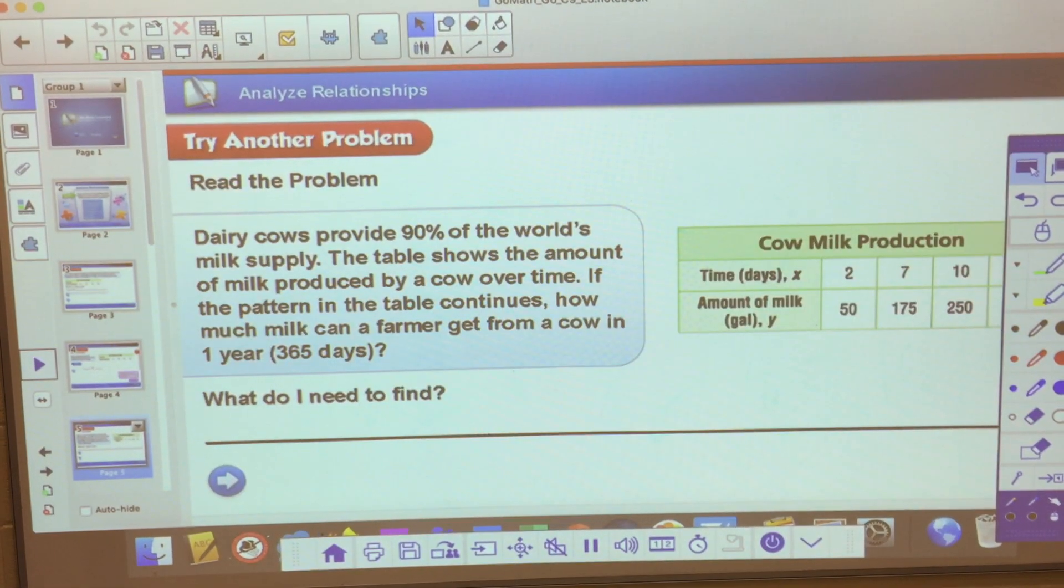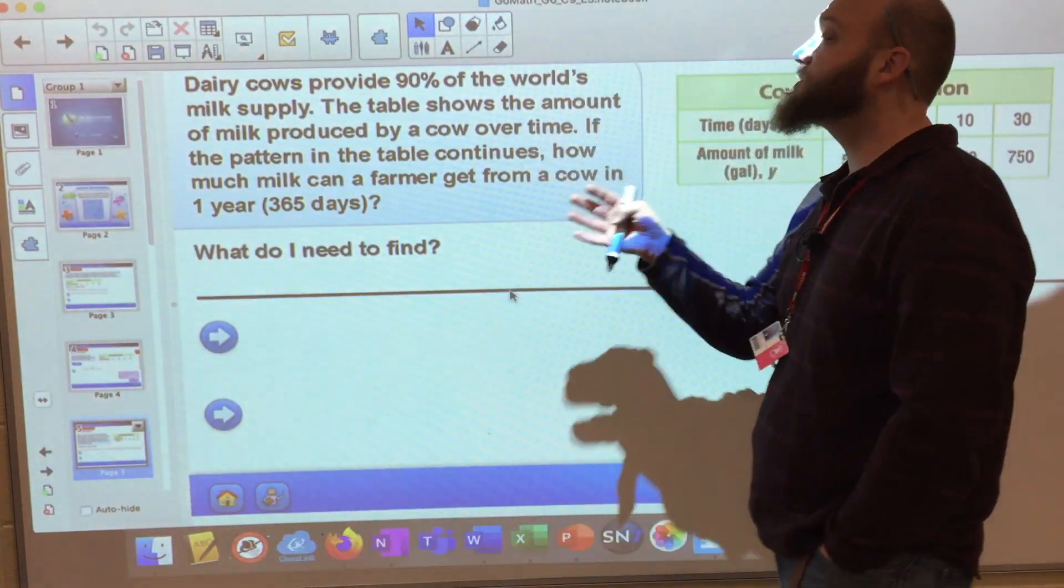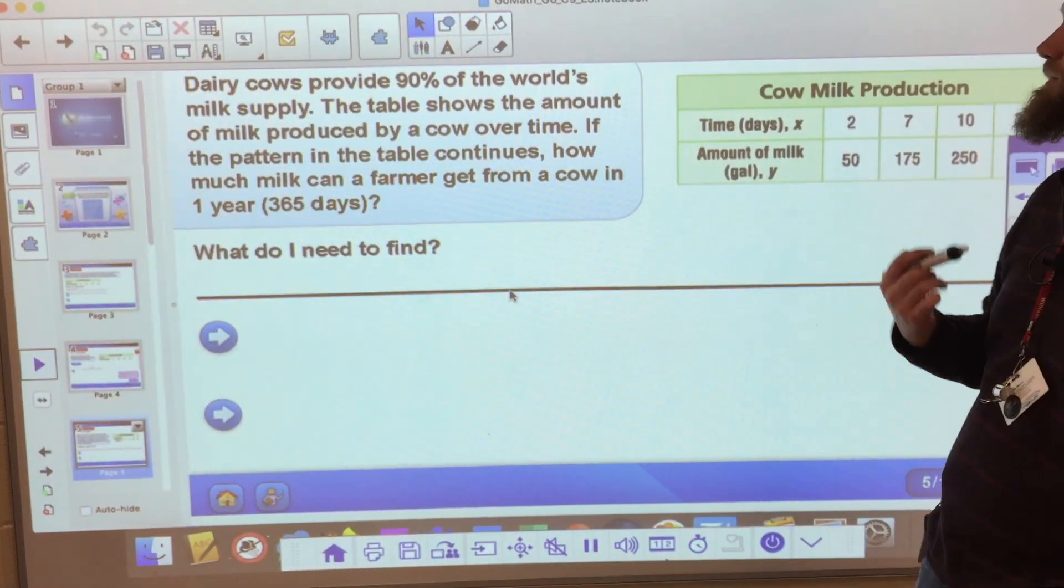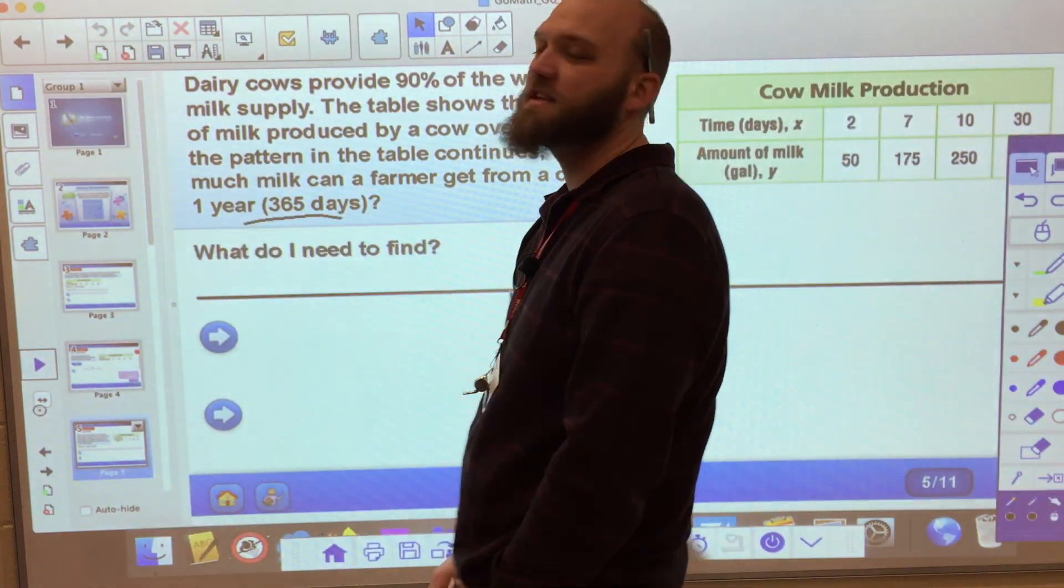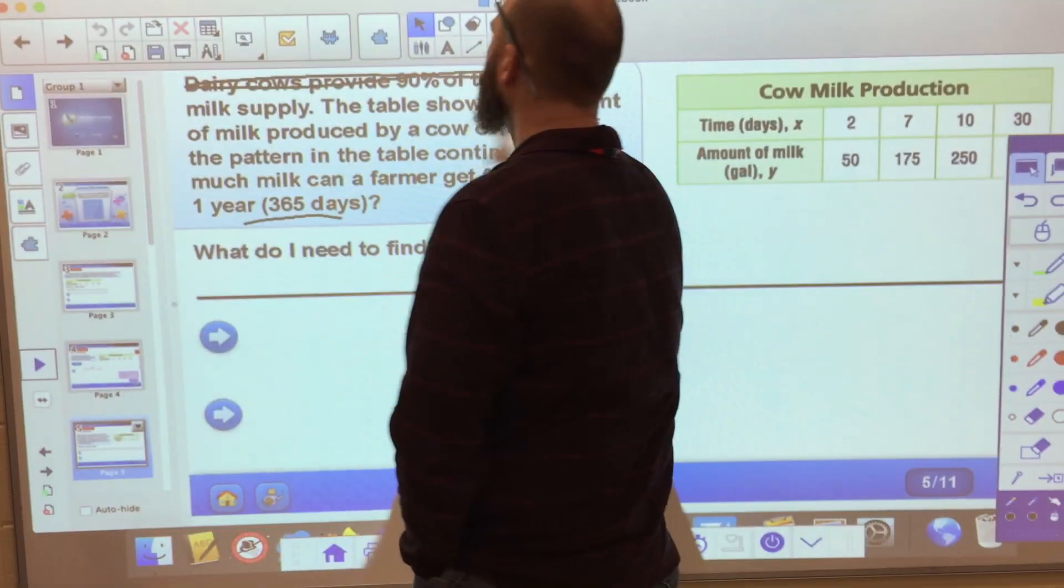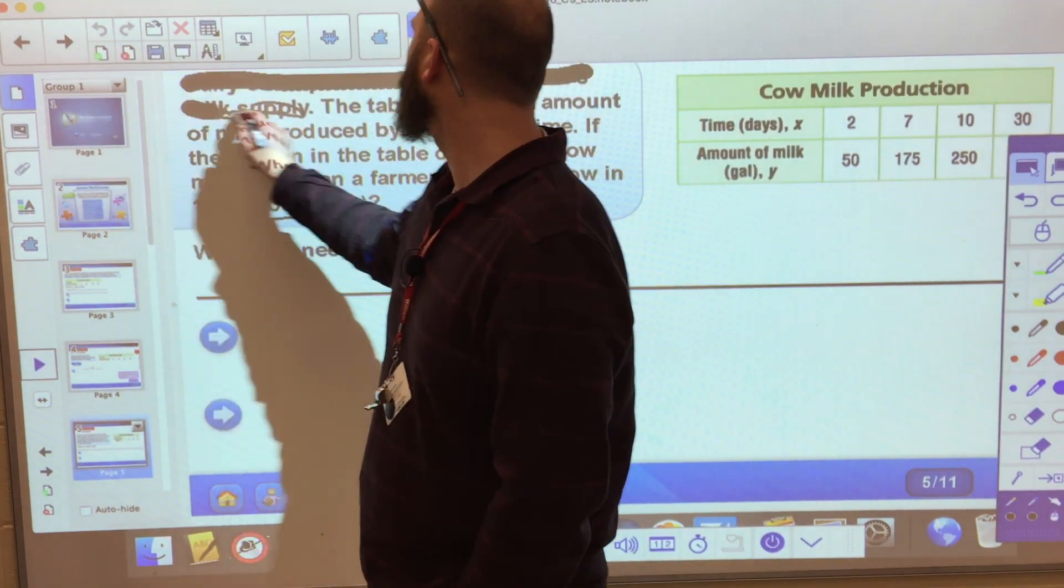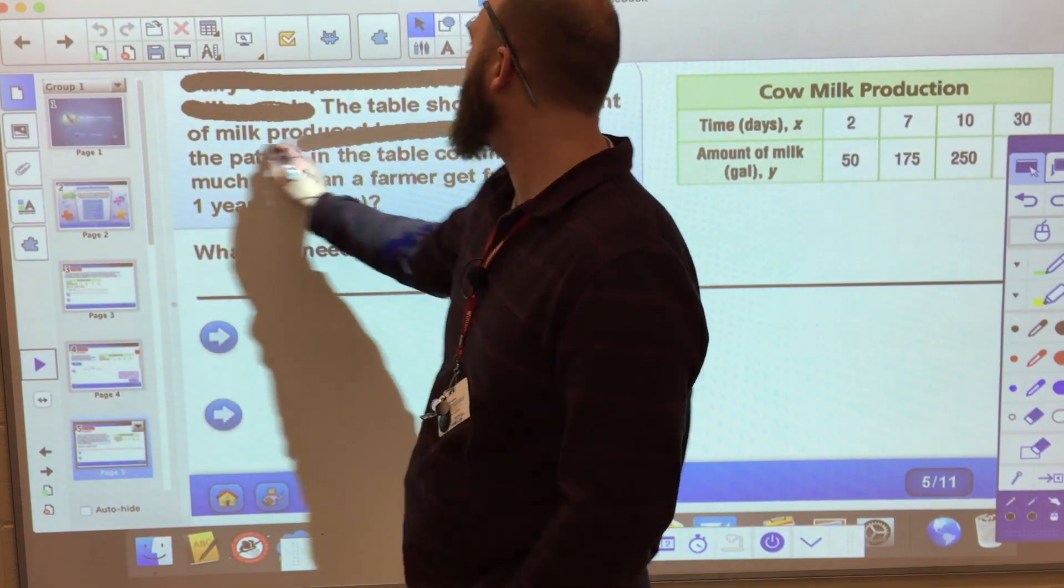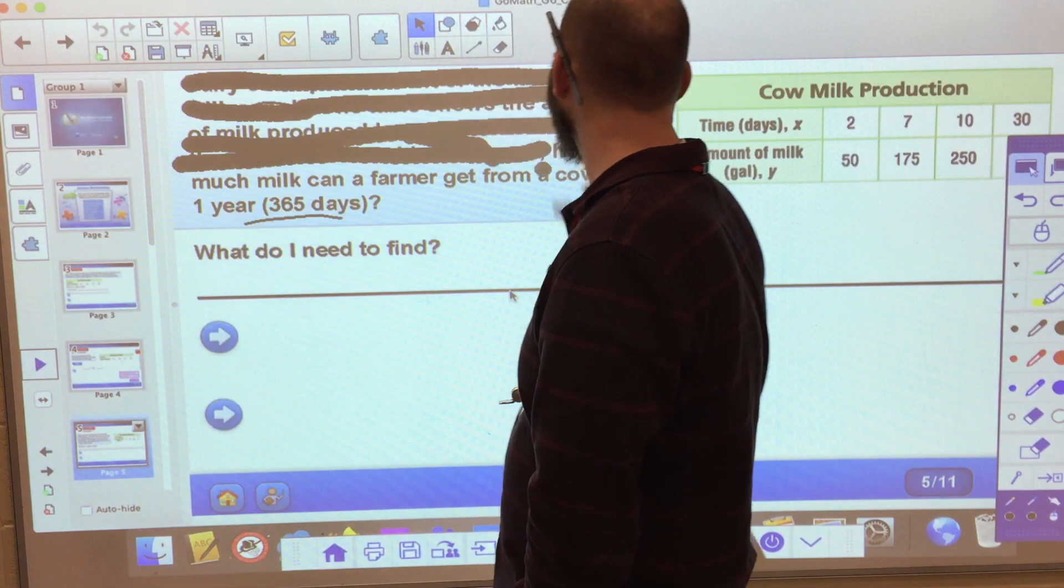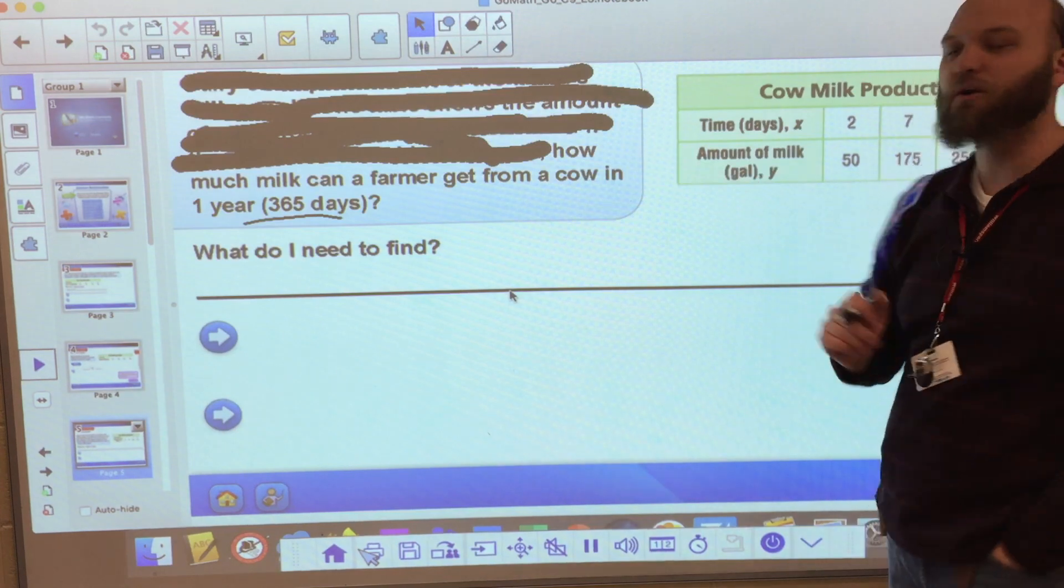Here we go. Dairy cows, they provide 90% of the world's milk supply. The table shows the amount of milk produced by a cow over time. If the pattern of the table continues, how much milk can a farmer get from a cow in one year? 365 days. So I look at my x and y, and here they actually do call them x and y.